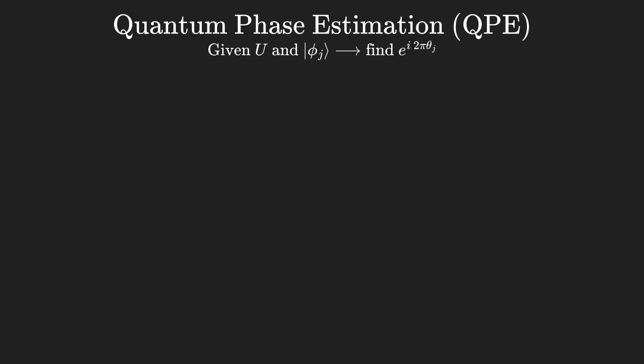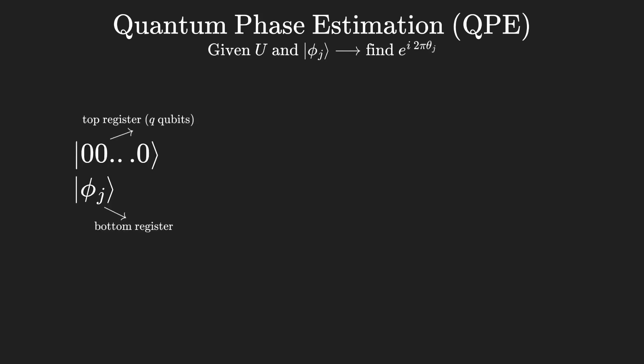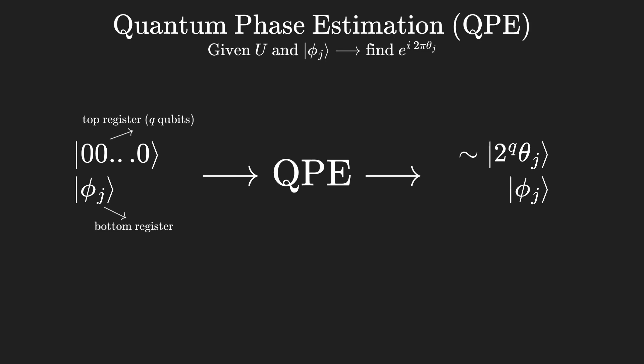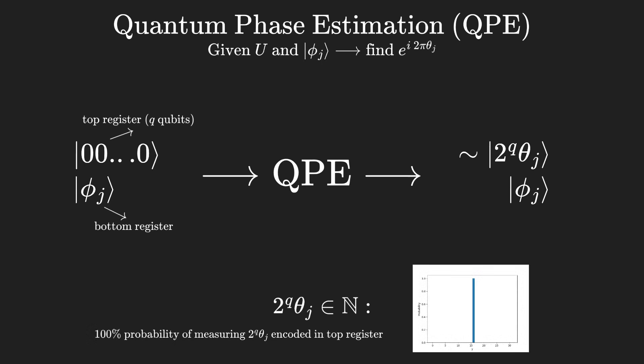The detailed circuit and the actual procedure is sadly beyond the scope of this video. The circuit works with two quantum registers: a top register, where the eigenvalue will be extracted, and a bottom register where the gate will act. The top register is initialized with all zeros, and the bottom register is prepared with the input eigenstate. In the way QPE works, measuring the top register in the end results in something close to a power of two times the eigenvalue argument, while the bottom register is left unchanged. If that value happens to be an exact integer, then measuring the top register will yield this value, encoded as a qubit integer, with 100% probability.